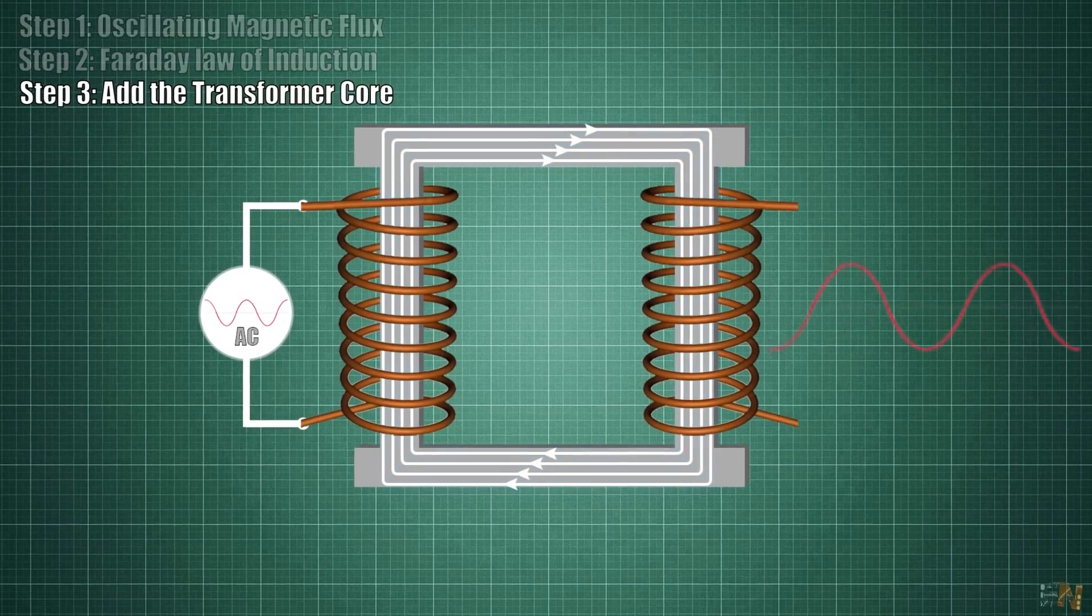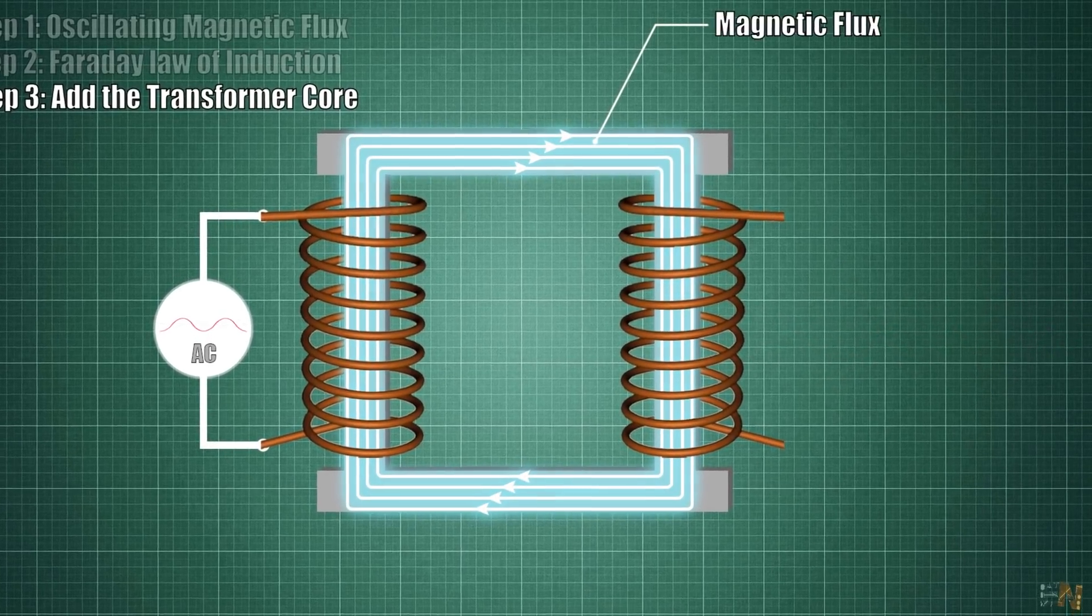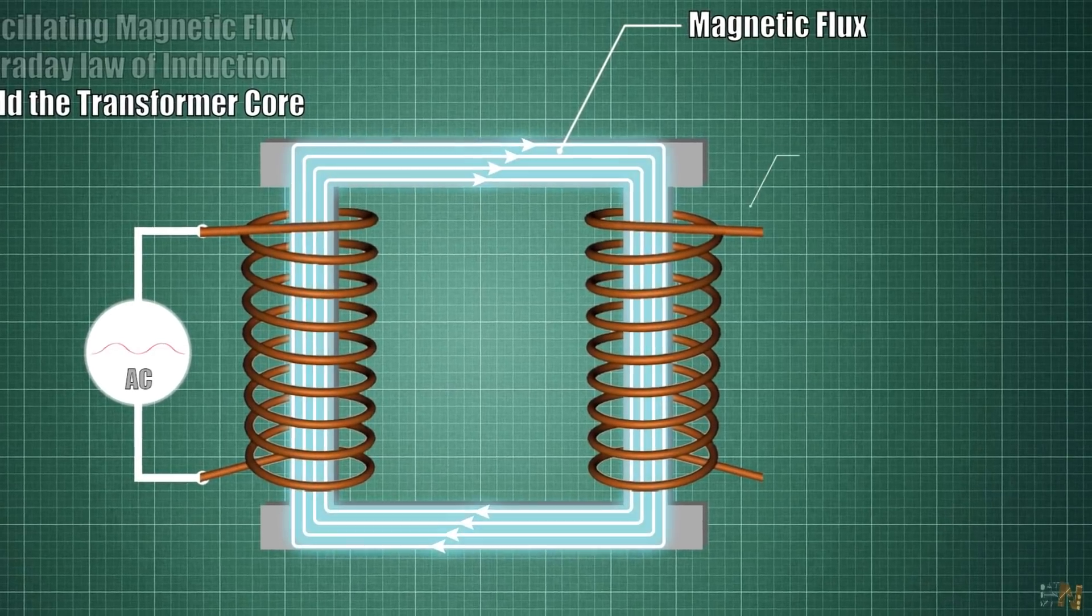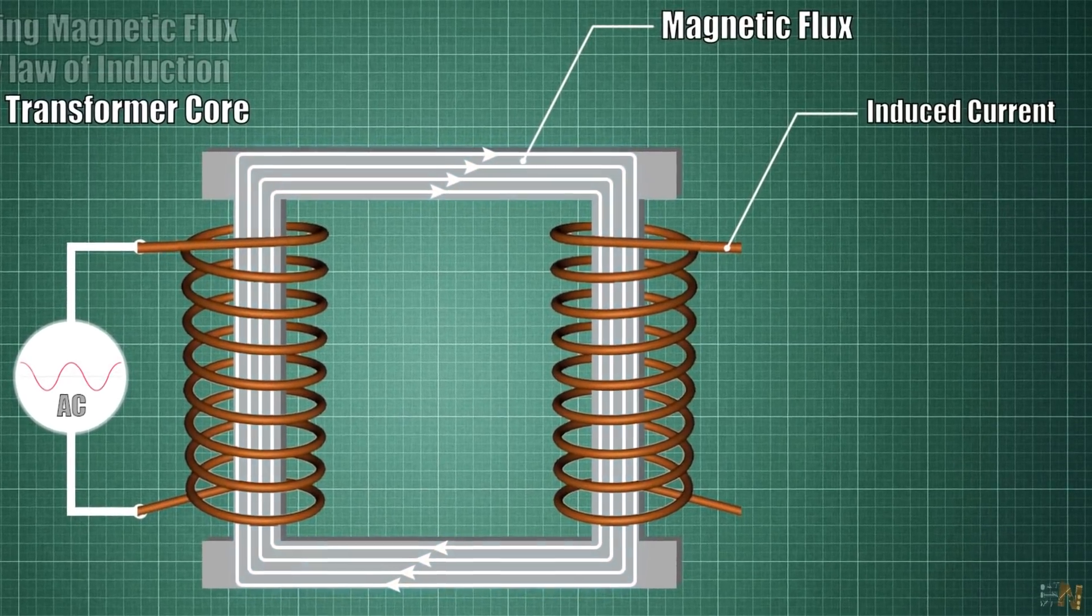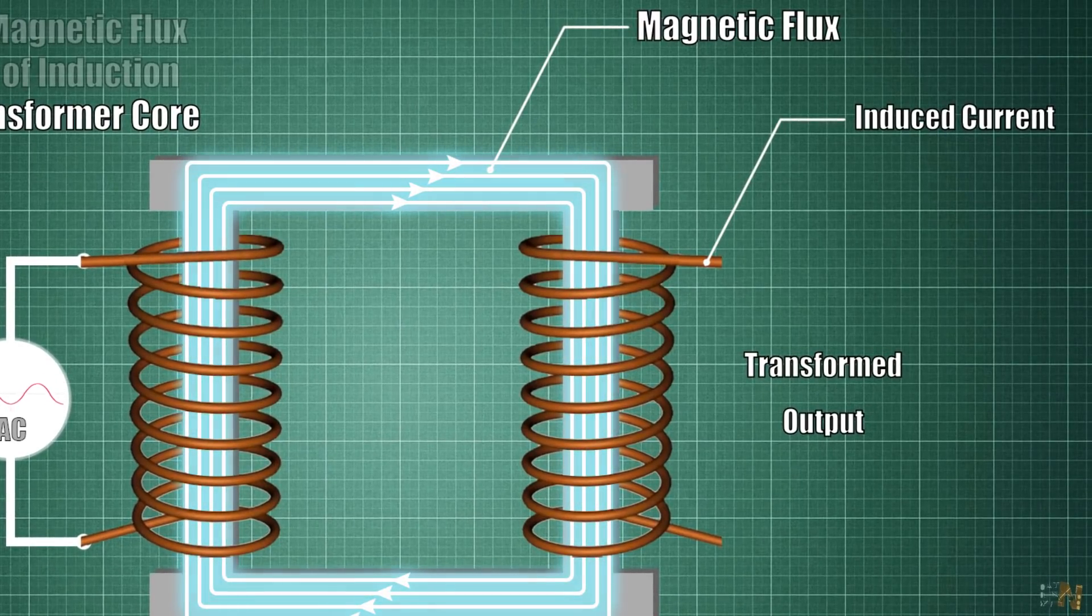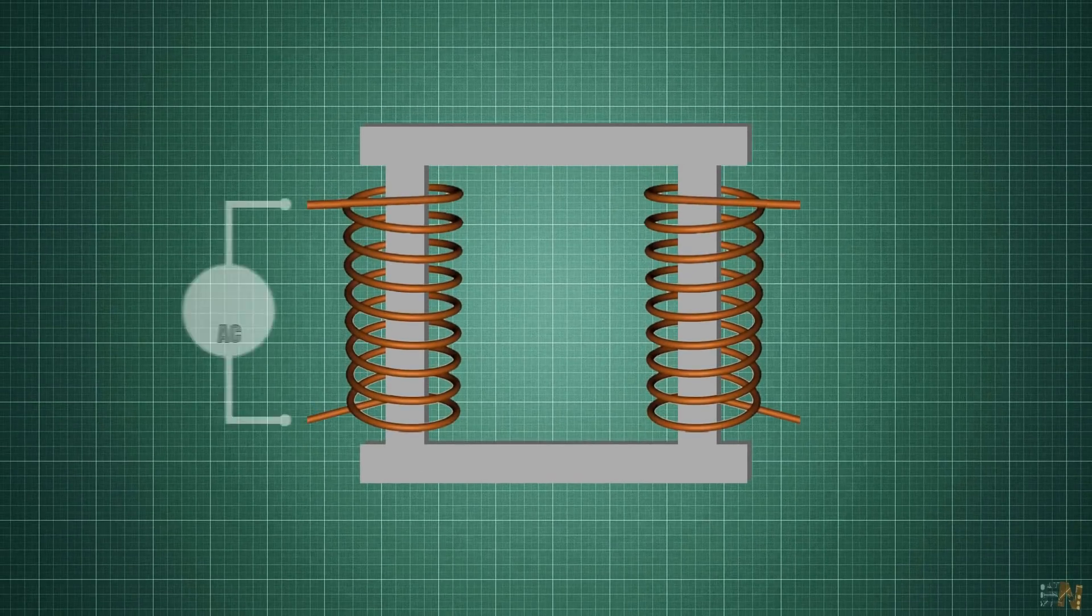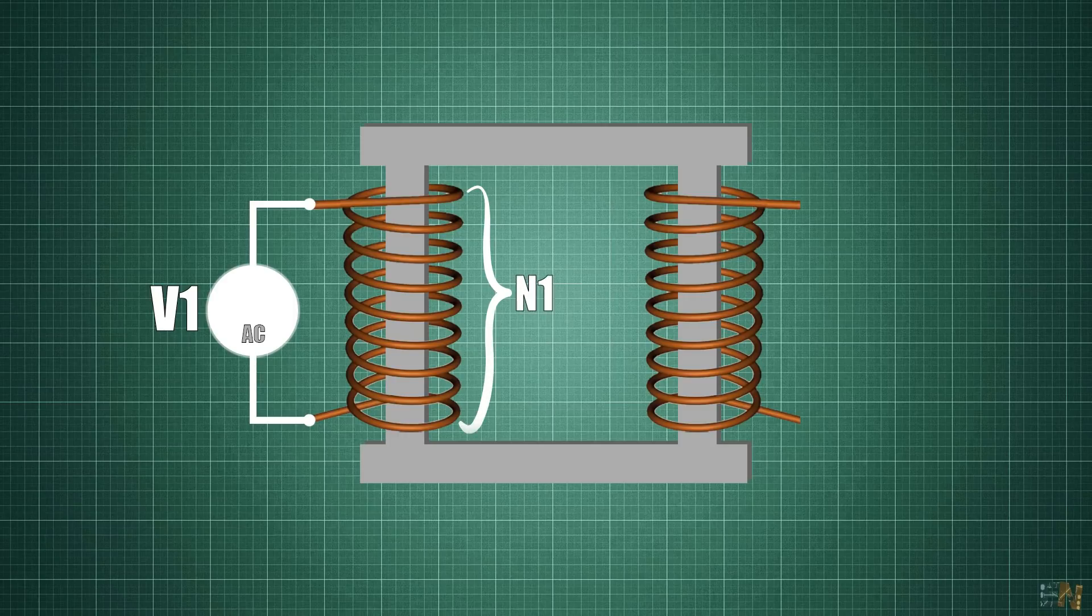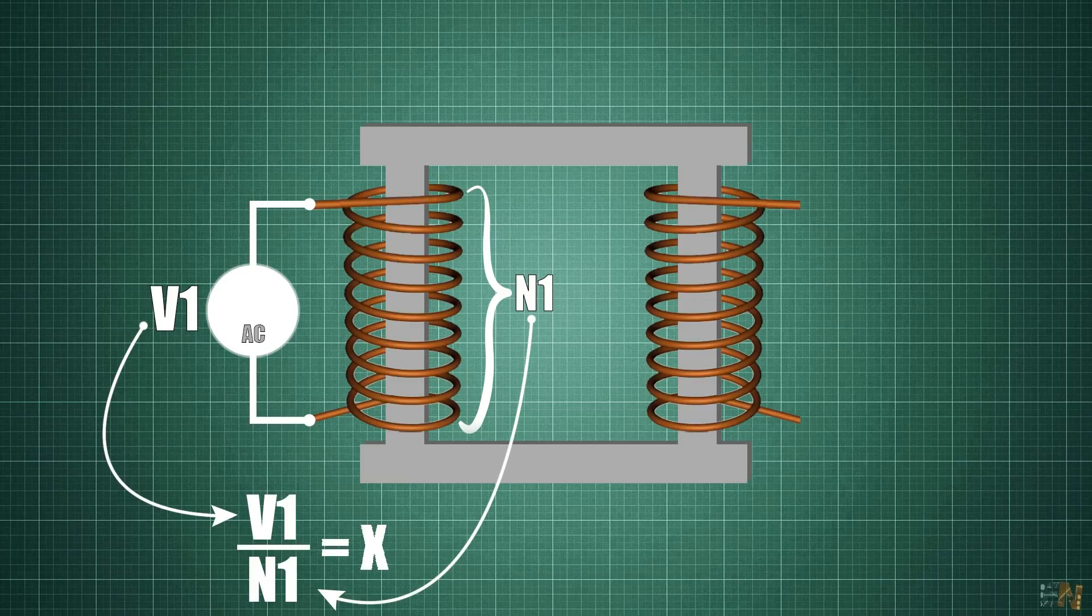We now have the input voltage passed to a variable magnetic flux. That magnetic flux induces current in the secondary and we have a different output voltage. So in that way we transform the voltage. But now we need some formulas. Let's name the voltage across the primary V1. Then we name the amount of turns of the primary coil N1. If I divide V1 by N1, we get the voltage drop on each winding and we name X.